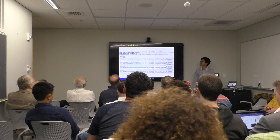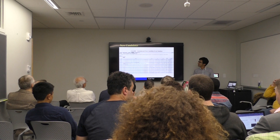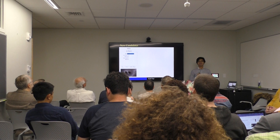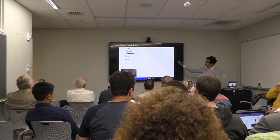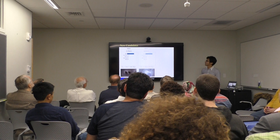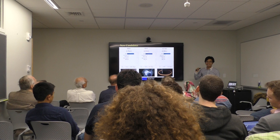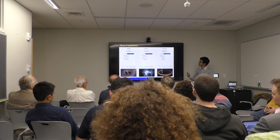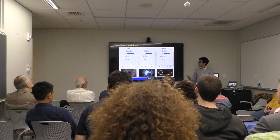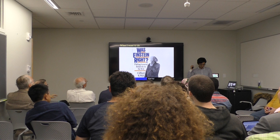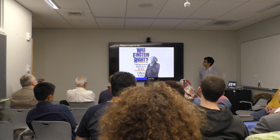If you go to the GraceDB website, you can see all the candidate events found during the third observing run. If you click one of the events, you can see the probability of candidates being a binary black hole, binary neutron star, or neutron star black hole. For example, one event in April is most likely a binary black hole merger, another in April is most likely a binary neutron star merger, and an exciting candidate in August is most likely a neutron star black hole merger. Today I want to explain what we can do in terms of testing GR using these new sources.